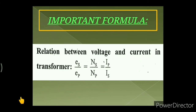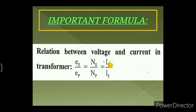The relation between voltage and current in the transformer is: Es/Ep = Ns/Np = Ip/Is, where Es and Ep are the EMFs induced in the secondary and primary coils, Ns and Np are the number of turns, and Ip and Is are the currents in the primary and secondary coils. These are the important formulas for Chapter 12: Electromagnetic Induction.